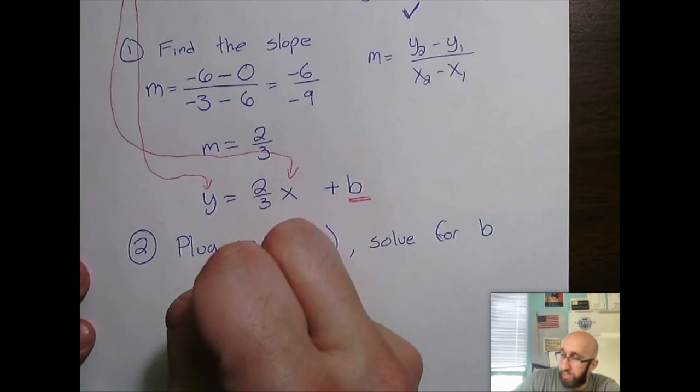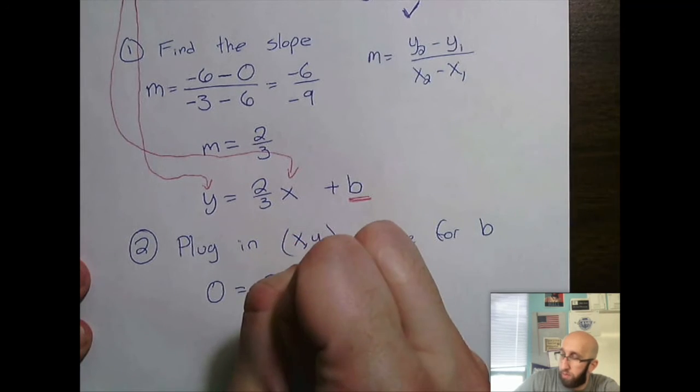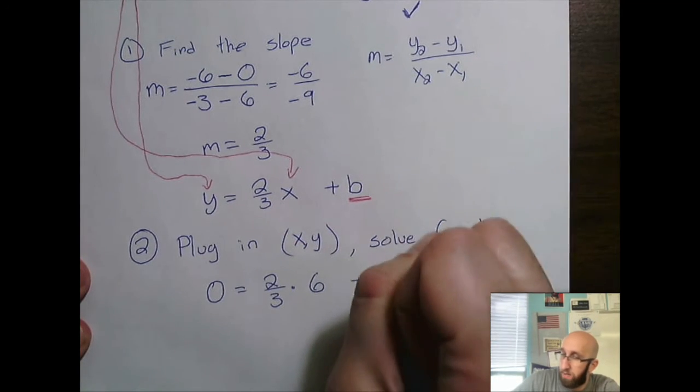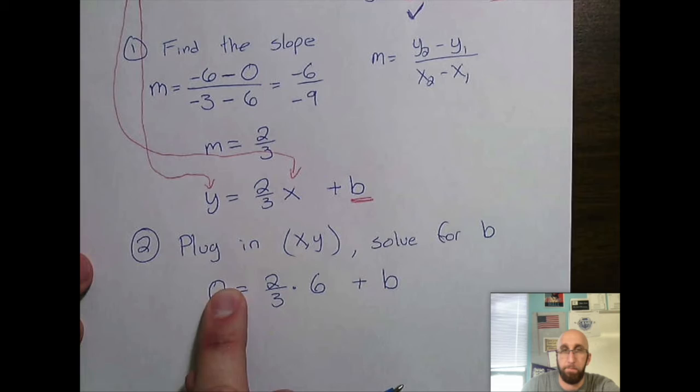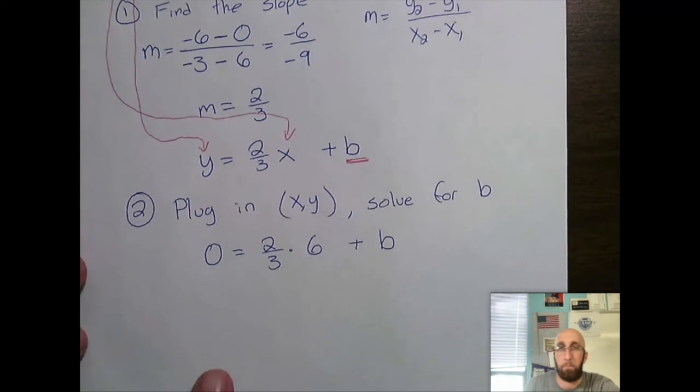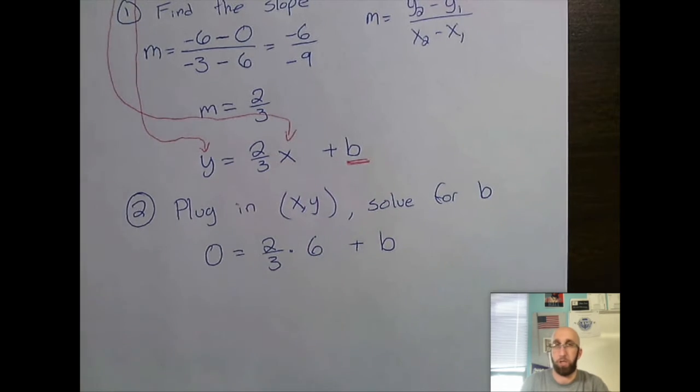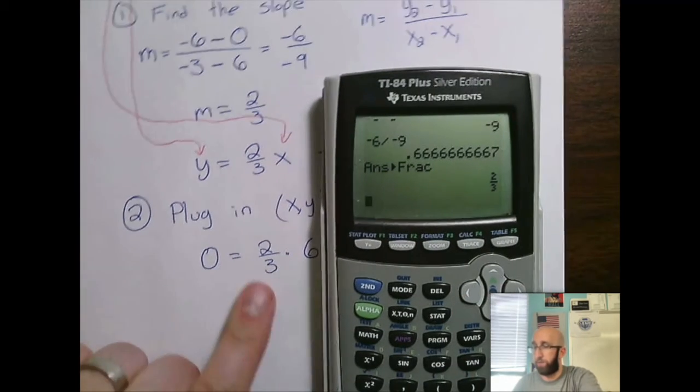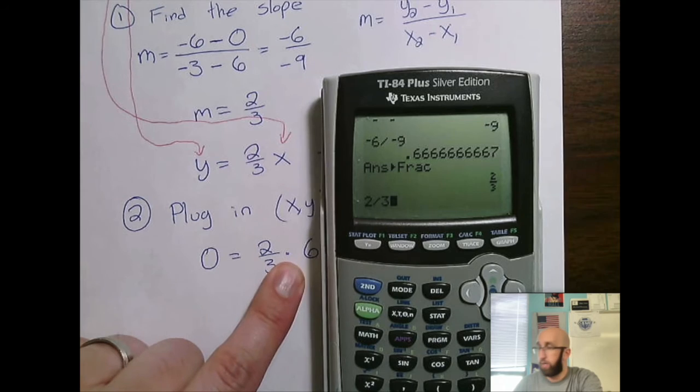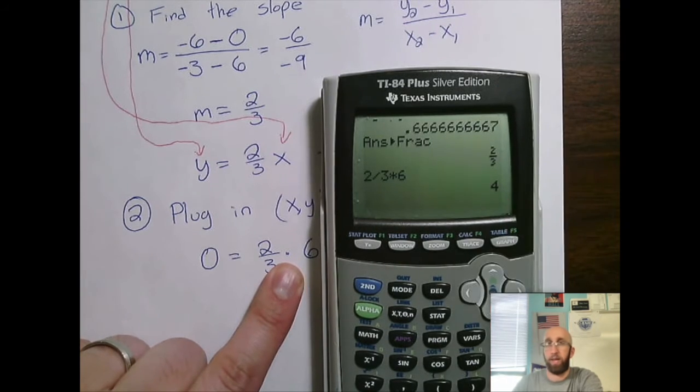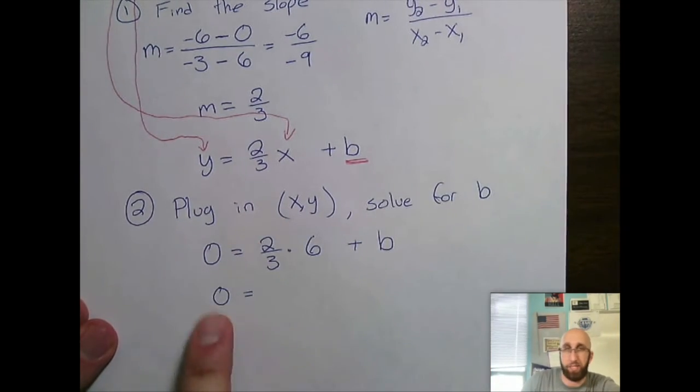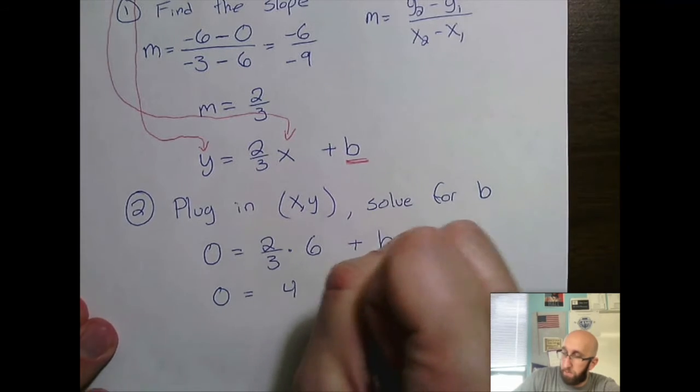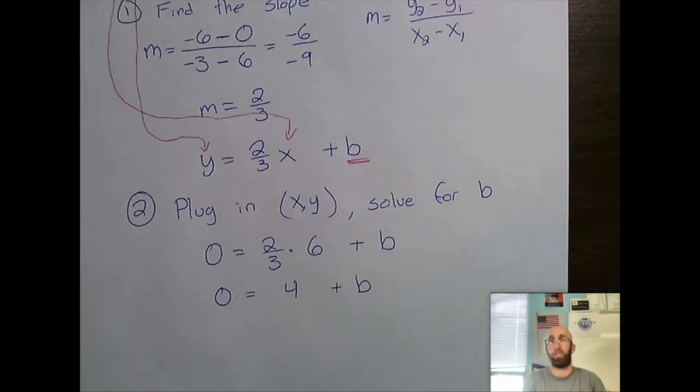So what this would look like is 0 equals 2 over 3 times 6 plus b. So I plugged in my 6 in for x, my 0 in for y. I just need to clean this up and solve for b. So I see some multiplication here that I can actually figure out. So if I type in 2 divided by 3 times 6, I get myself 4. So we clean this up. I still got a 0 because I haven't touched that. 0 equals 4 plus b. My goal is to solve for b.